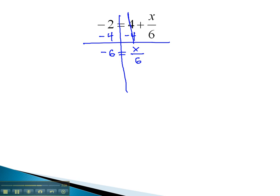Still trying to get the x alone. Right now, the x is divided by 6, so we do the opposite, which is to multiply by 6 on both sides. The 6's divide out, and x is equal to 6 times negative 6, which is negative 36. And we have our solution.